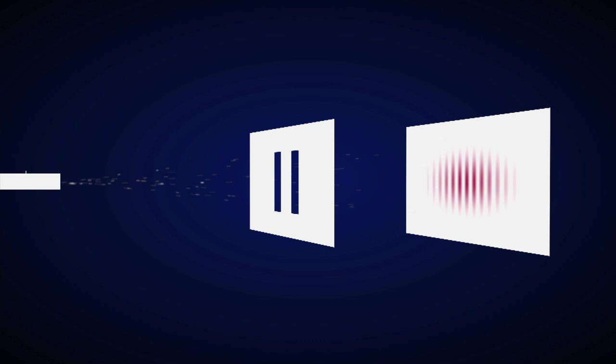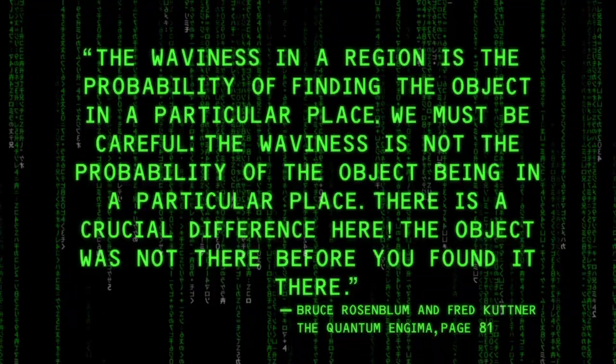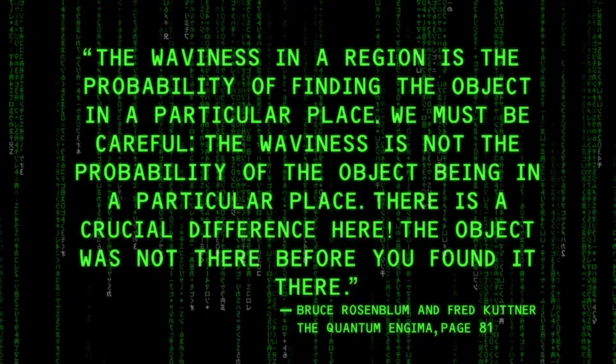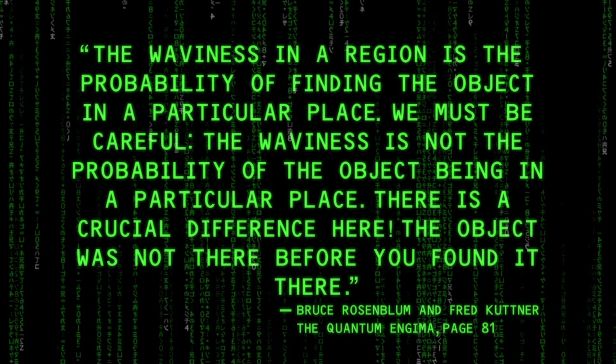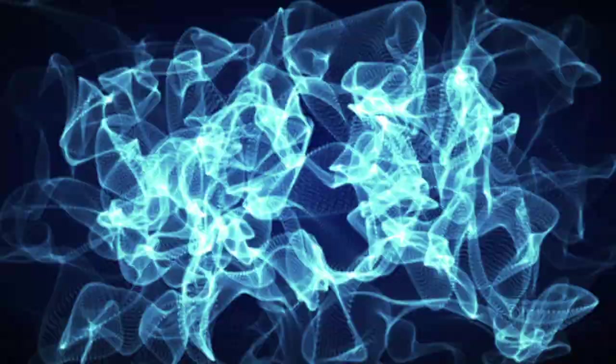The key to understanding what is happening is that matter doesn't exist as a wave of energy prior to observation, but as a wave of mathematical potentialities. The waviness in a region is the probability of finding the object in a particular place. We must be careful, the waviness is not the probability of the object being in a particular place. There is a crucial difference here, the object was not there before you found it there. In other words, prior to measurement, experimental results and the mathematical formalism implies there is no physical particle there. Measurement causes the wave function, the mathematical probability, to collapse and reveal the physical particle, but nothing was physically there prior to measurement.